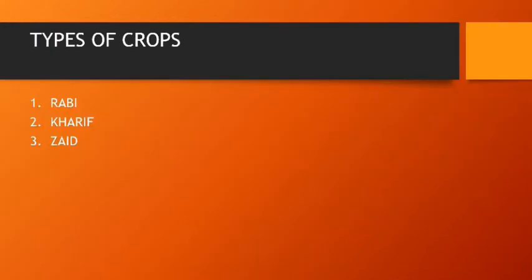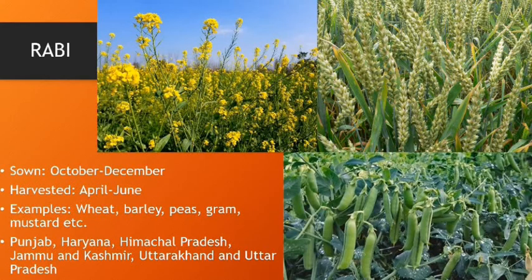There are three types of crops: Rabi, Kharif, and Zaid. The Rabi crop is sown in the months of October, November, and December, and harvested in April, May, and June. Examples include wheat, barley, peas, mustard, etc. It is sown in the states of Punjab, Haryana, Himachal Pradesh, Jammu and Kashmir, Uttarakhand, and Uttar Pradesh.